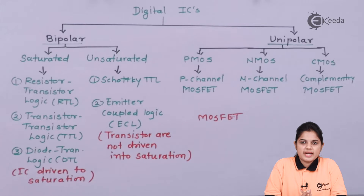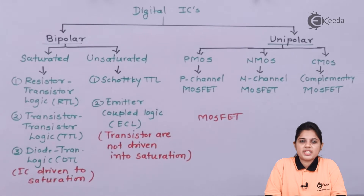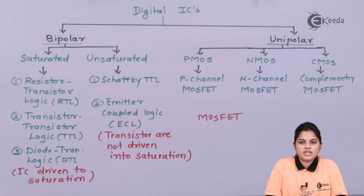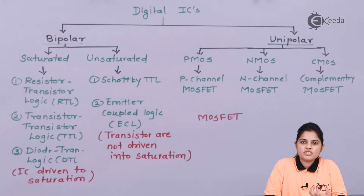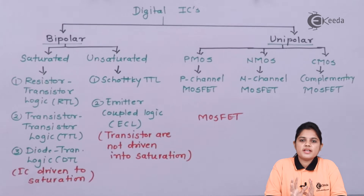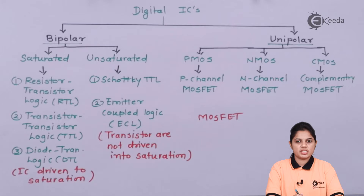In a field effect transistor (FET), it is a voltage-controlled device. The current generated is due to voltage variation and the presence of a field or channel. In this channel, electric current flows because of majority carriers, which can be either electrons or holes. Since the current is generated due to a single polarity — either negative or positive — it is called a unipolar device. Depending on bipolar and unipolar devices, we have a corresponding classification of digital ICs.